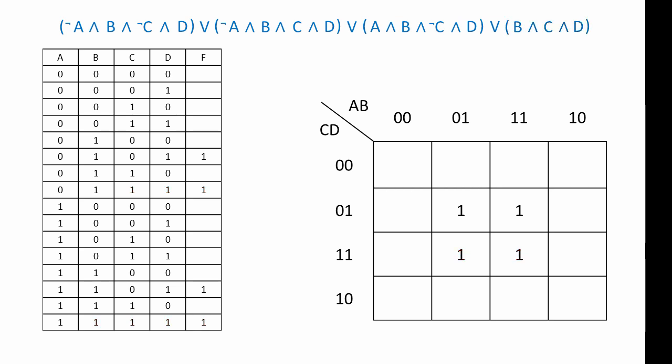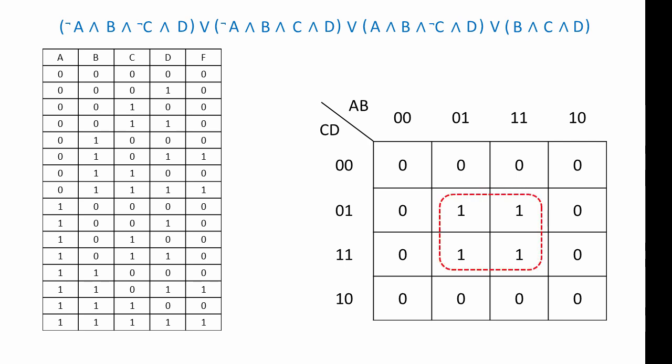My truth table and my K-map are now complete. Looking at the simplified expression I can derive: I've got one group of ones here, and I can see that they always correspond to a value of one for input B, and they also always correspond to a value of one for input D. So this expression is simply B AND D.